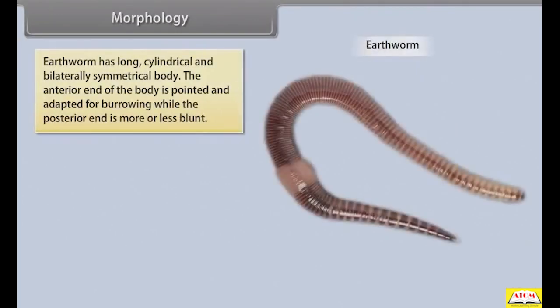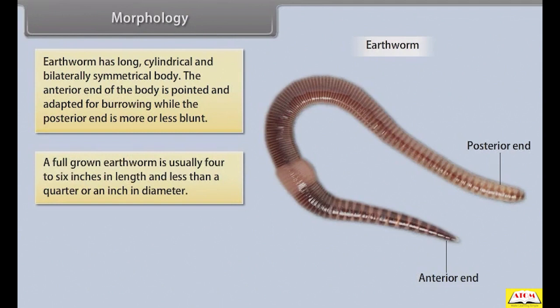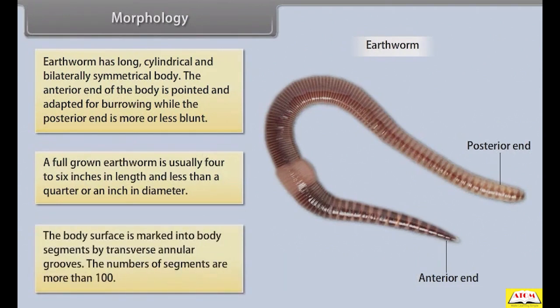Earthworm has a long, cylindrical and bilaterally symmetrical body. The anterior end is pointed and adapted for burrowing, while the posterior end is more or less blunt. A full-grown earthworm is usually 4 to 6 inches in length and less than a quarter inch in diameter. The body surface is marked into segments by transverse annular grooves, with more than 100 segments.